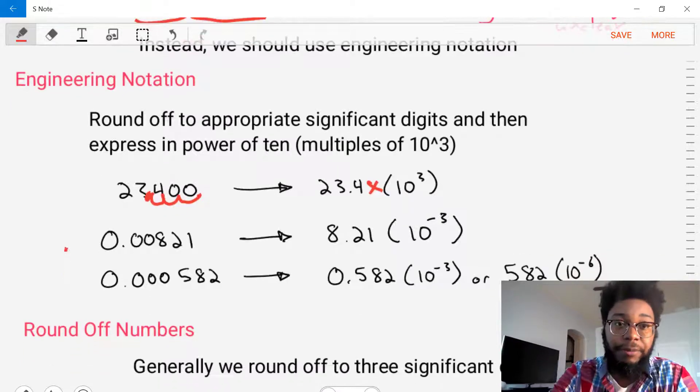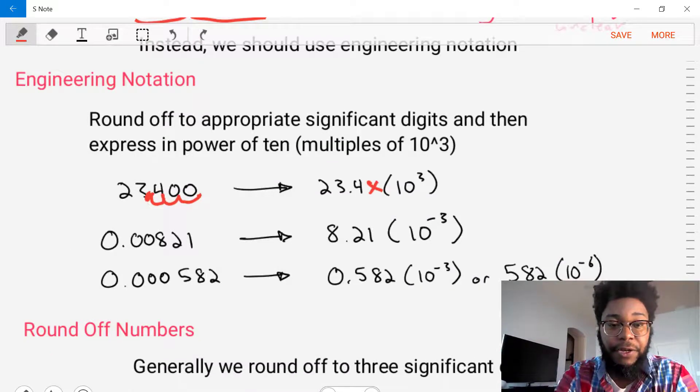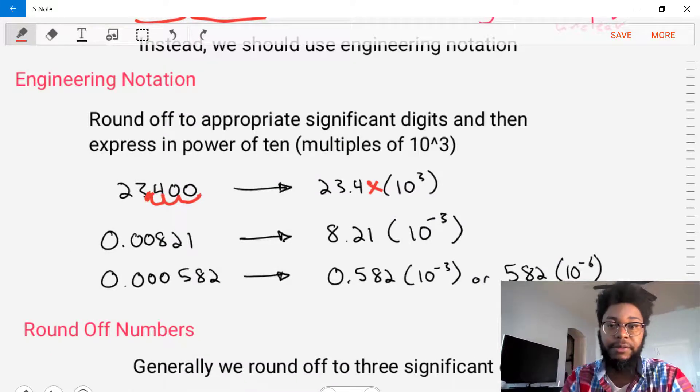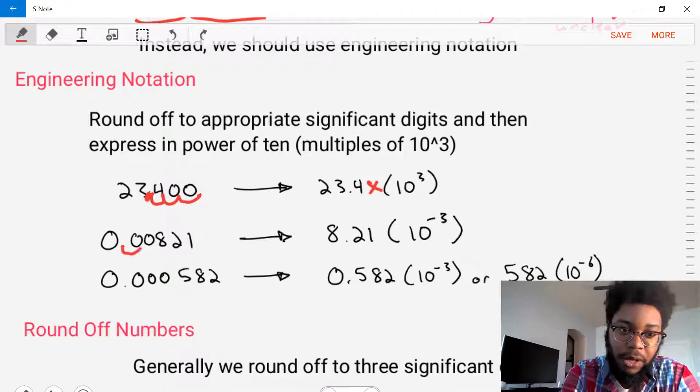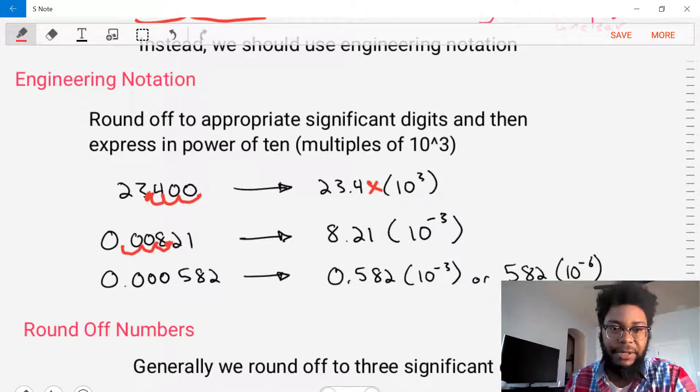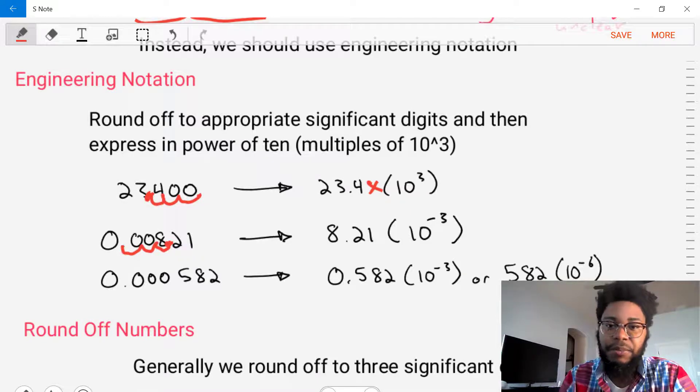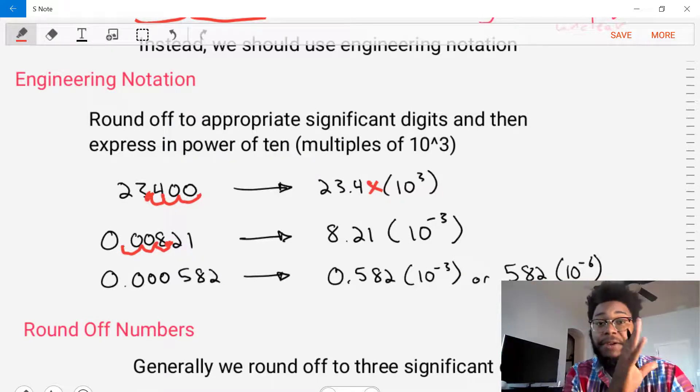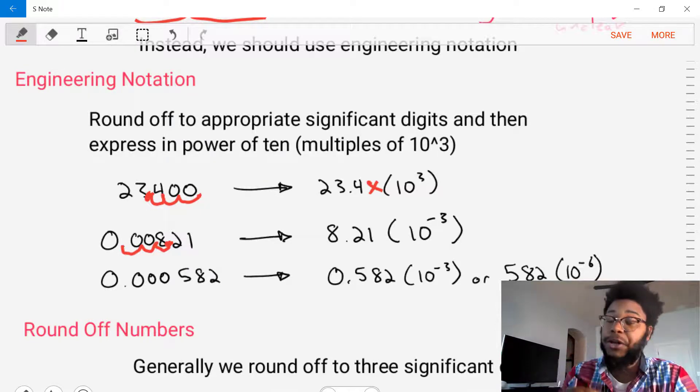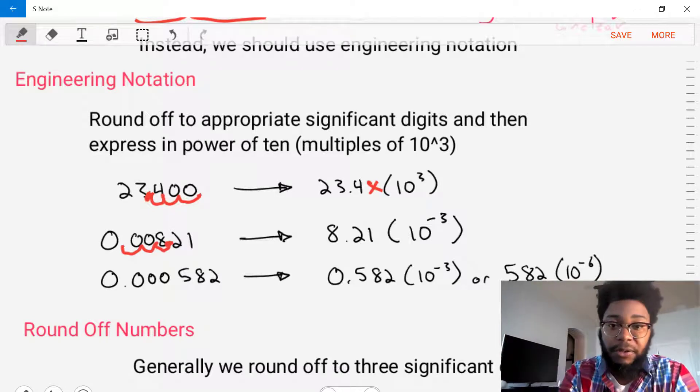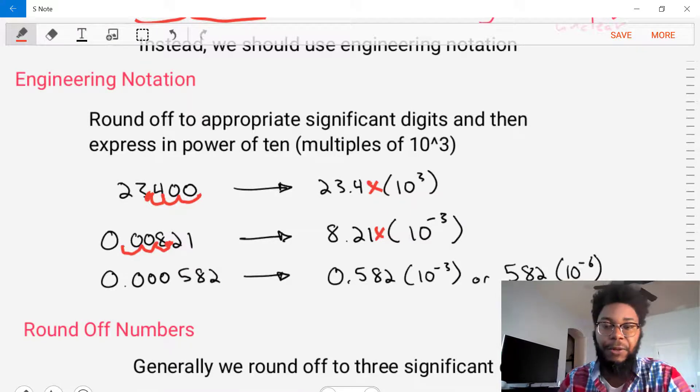So let's try it on a small number. Let's try it on this number of 0.00821. We want to try to do a multiple of three. Let's move it one, two, three. That's a pretty good position to place it at. So we end up with a number of 8.21. Now, since we've moved to the right, what we're going to do is do a multiple, but we're going to put a negative sign on it. So we're going to put 8.21 times 10 to the power negative three, because this is a small number.